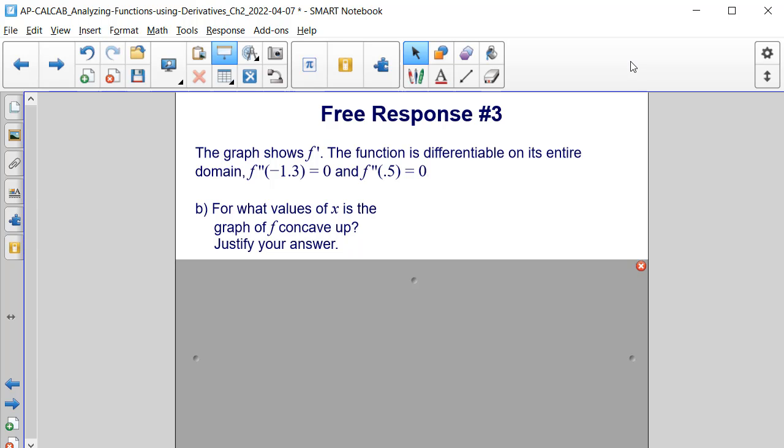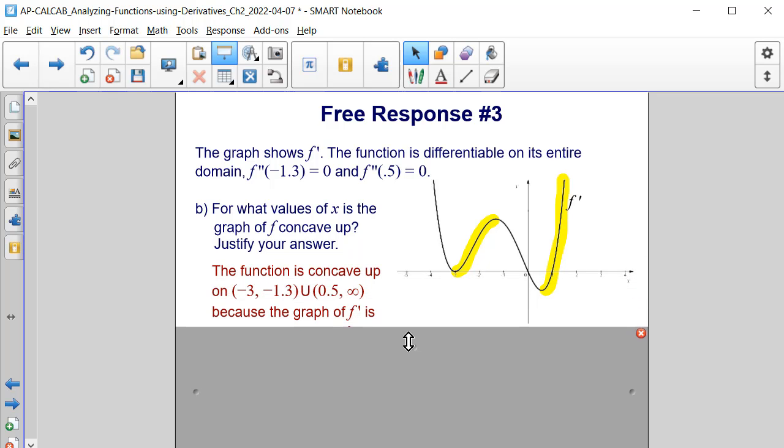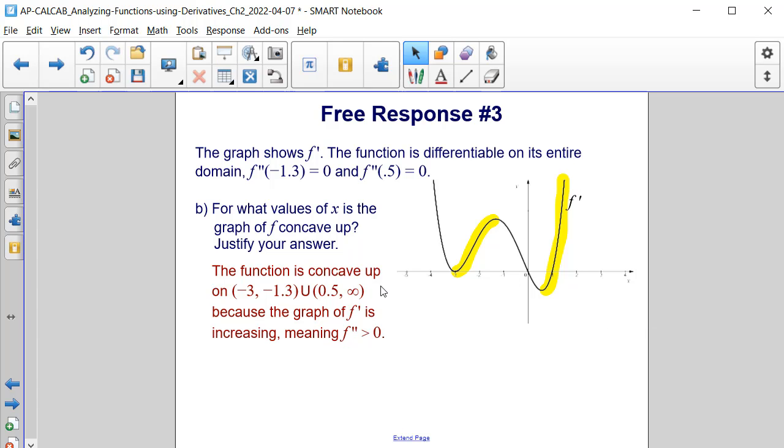The next question asks, for what values of x is the graph of f concave up? And to justify your answer. Well, graphs are considered to be concave up when the derivative graph is increasing. If we look at our derivative graph, it's increasing from negative 3 to negative 1, and then again from 1 half to infinity. Therefore, those are the corresponding intervals where the original function f will be concave up.